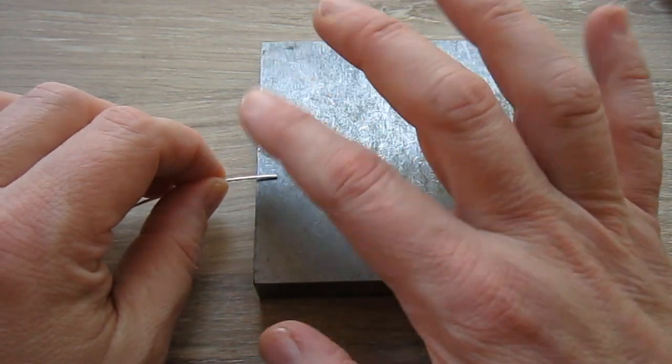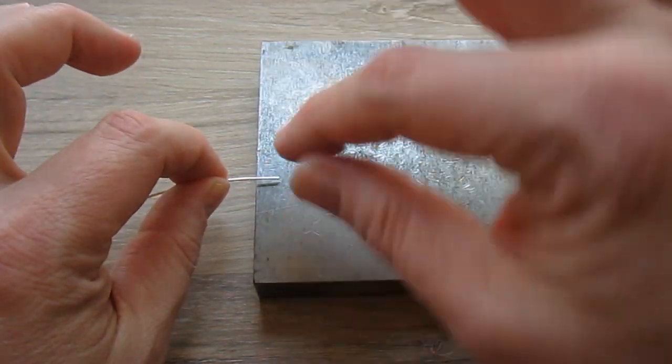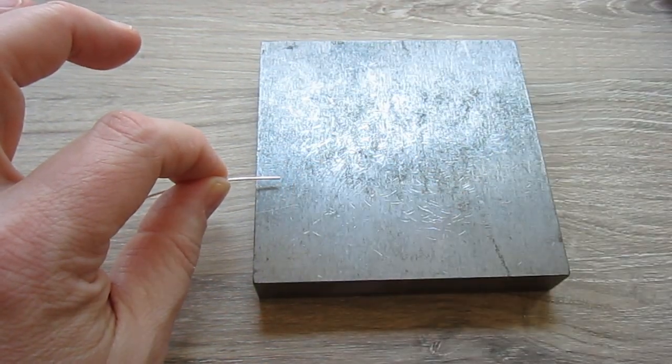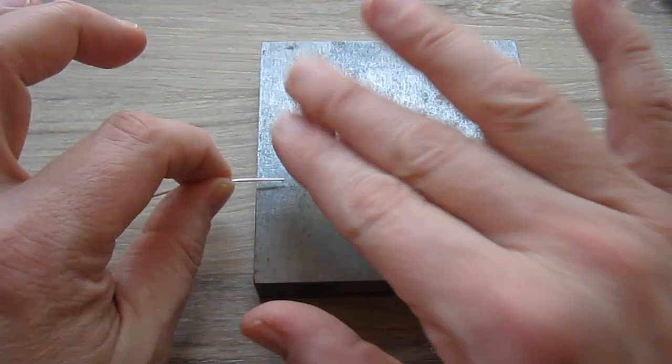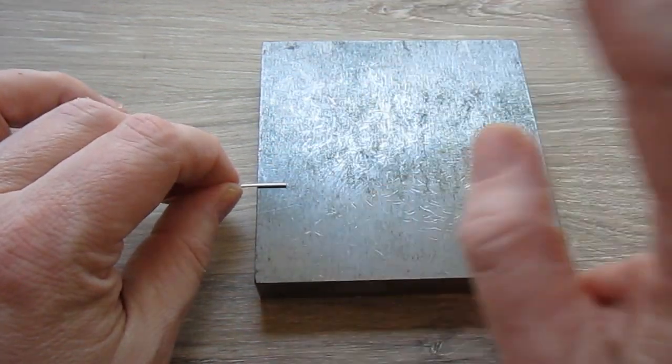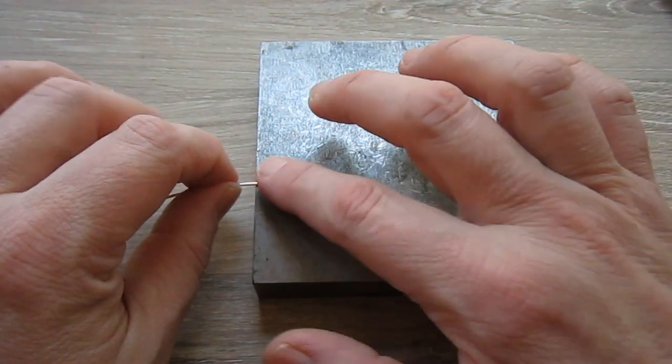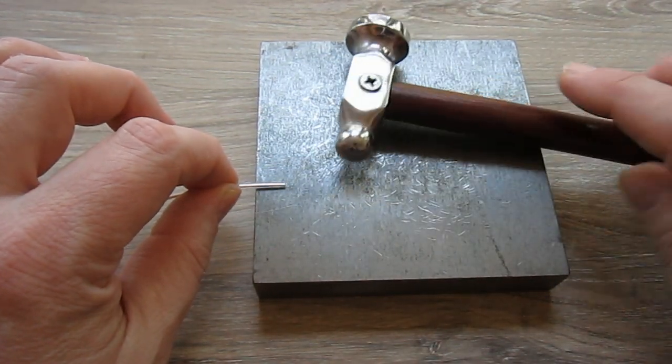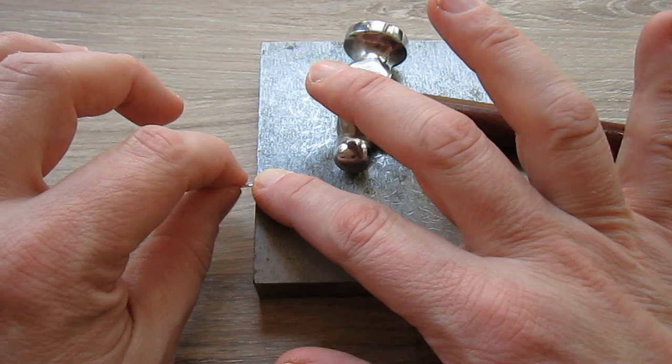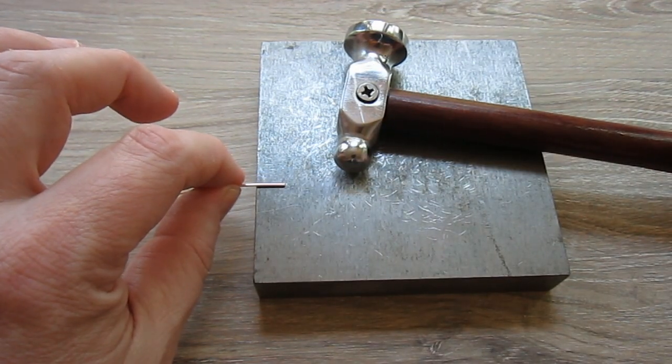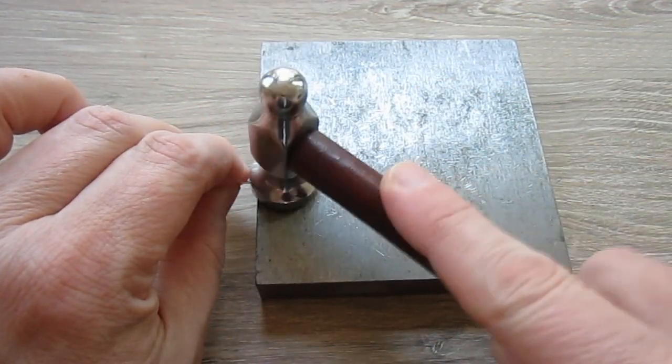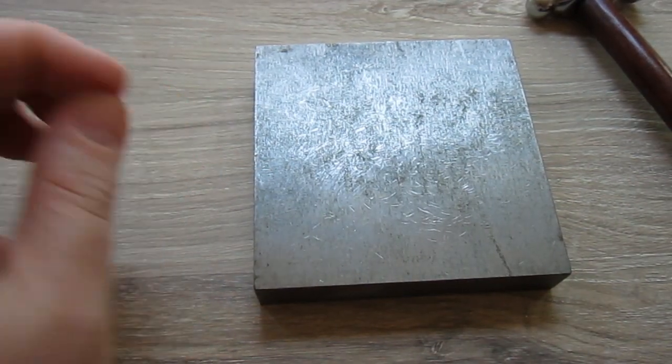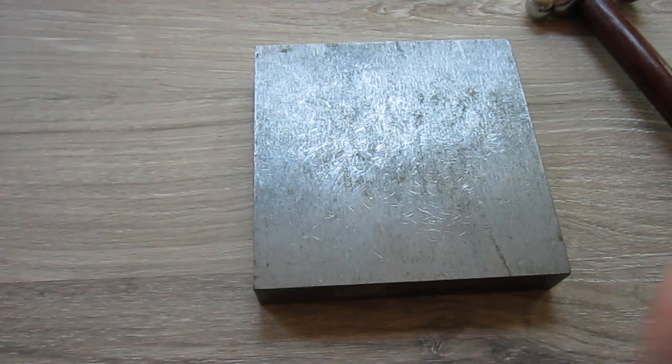And what we're going to do is just on the end we're going to flatten this wire. So it's going to flatten it and then spread it so that it will actually hold the beads on it. So I'm not going to talk while I'm hammering. But basically we're just going to hammer it with this chasing hammer until it is flat enough to hold the bead on.